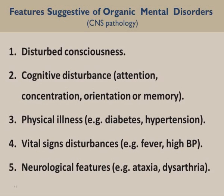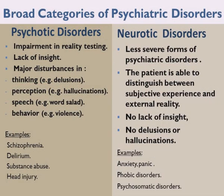Five, neurological features — for example, ataxia, dysarthria, nystagmus. In brief, the presence of some or all of these five factors or signs suggests an organic mental disorder.